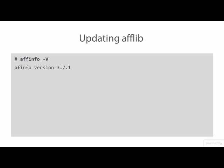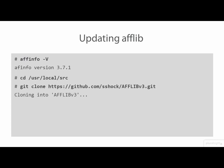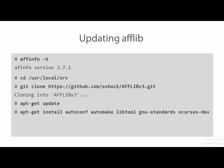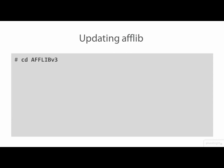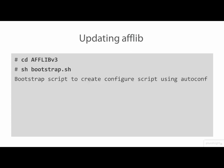To do this, we'll first download the source code from GitHub into user local source. Next, we need to make sure that we have the tools and libraries needed to build AFFLib. Accept the default setting for installing these packages. Now change into the AFFLib source folder.